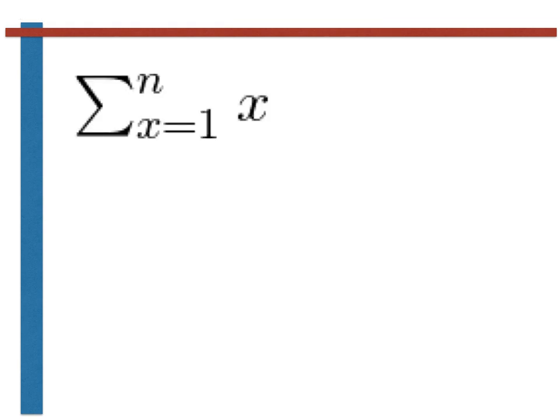We will consider the following very simple summation, the sum of the first n natural numbers. If this sum is computed with n equals 1, it is 1. If it is computed with n equals 2, it is 1 plus 2, which is 3. If it is computed with n equals 3, it is 1 plus 2 plus 3, which is 6. Easy.